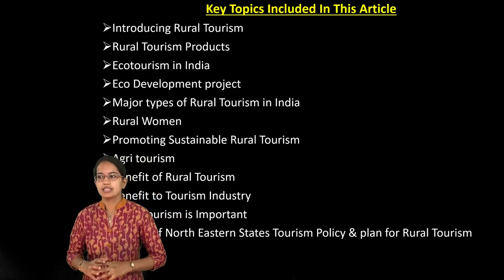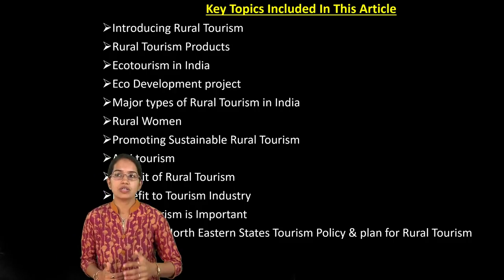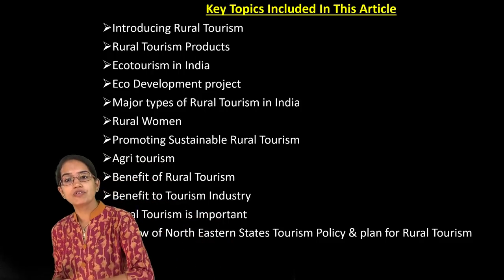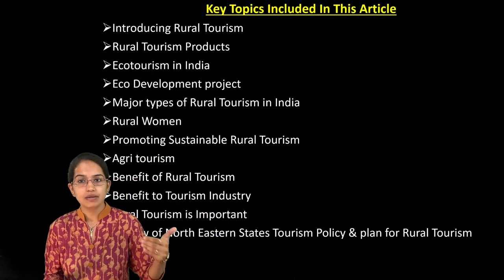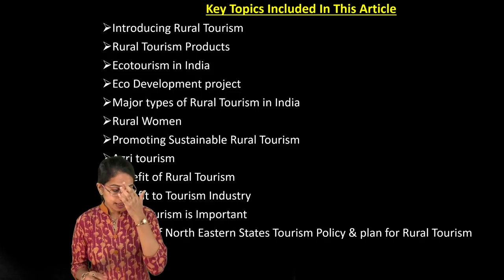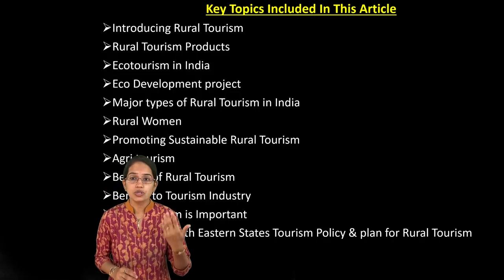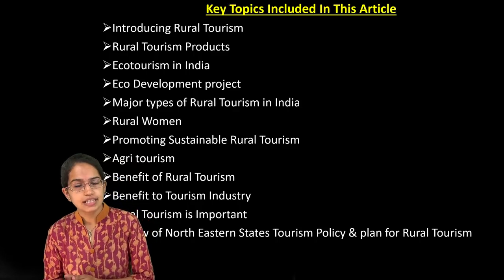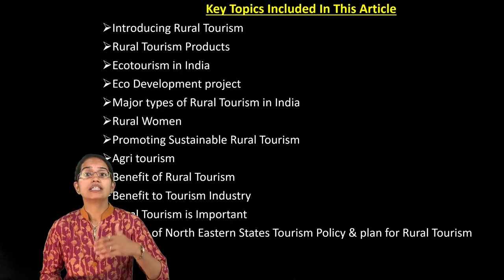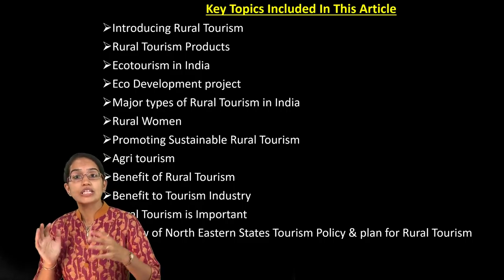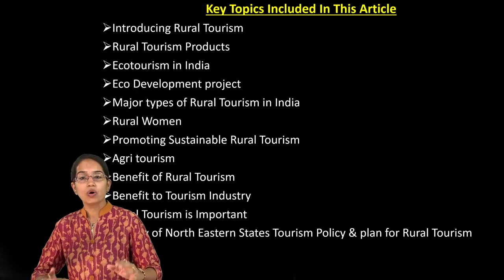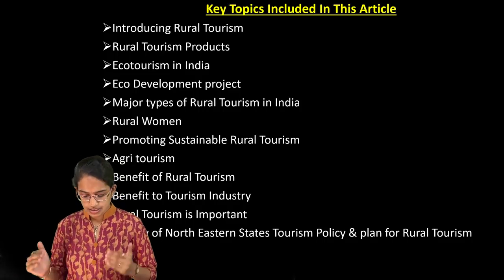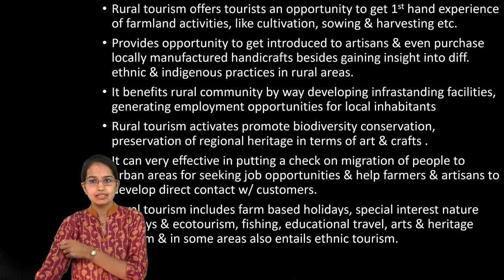When we are talking about tourism, we have the 13 thematic circuits that have been identified, of which rural circuits have been given priority. We also have various eco development and eco tourism projects, including the Govardhan village in Maharashtra which recently won the UNESCO award for innovation. We are talking about sustainable rural tourism and the problems of cultural erosion and acculturation.